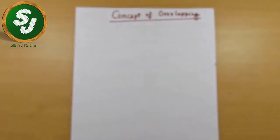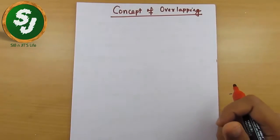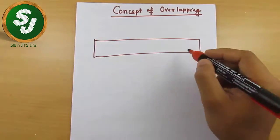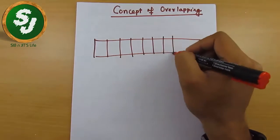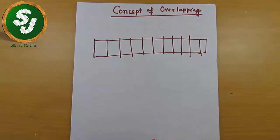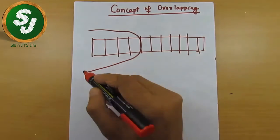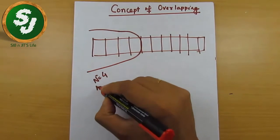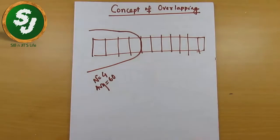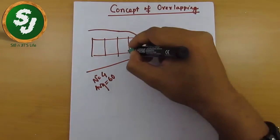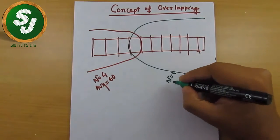Let's discuss the concept of overlapping. For example, if there are 11 numbers in total, and I give you the average of the first four numbers where n equals 4 and average equals 60, and also the average of the last eight numbers where n equals 8 and average equals 80.